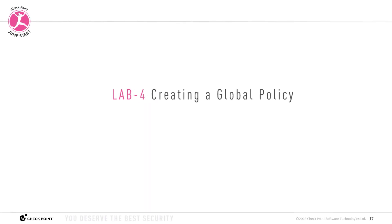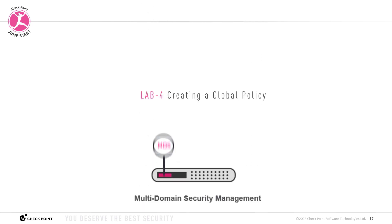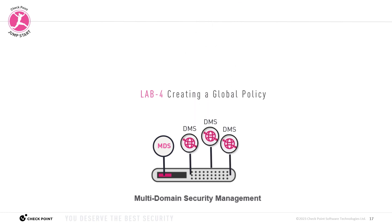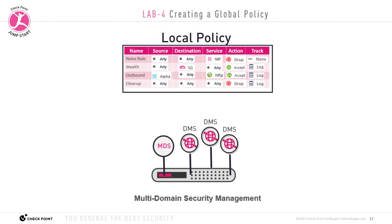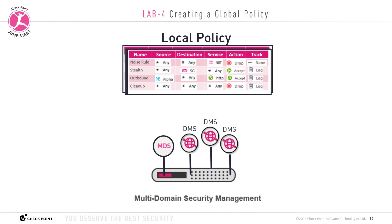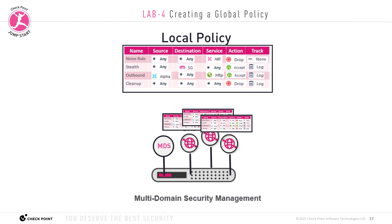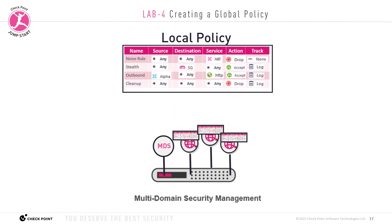Welcome to Lab 4, Creating a Global Policy. Let's review. In Lab 1, we installed the multi-domain server. In Lab 2, we installed the DMS, the domain management servers. And in Lab 3, the previous lab, we created local policies, local security policies, one for each domain, and then we installed the local security policies on each domain's security gateways.